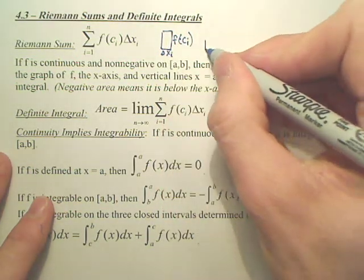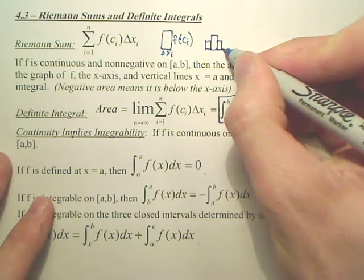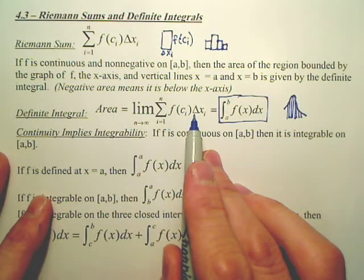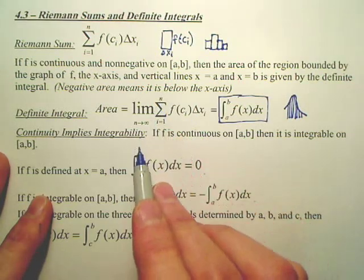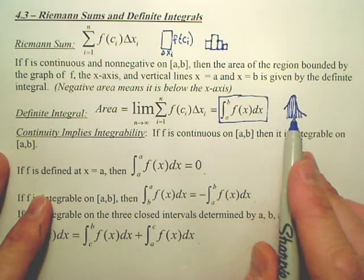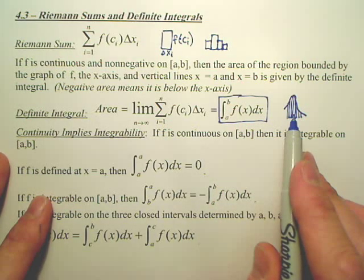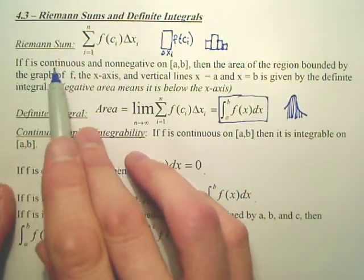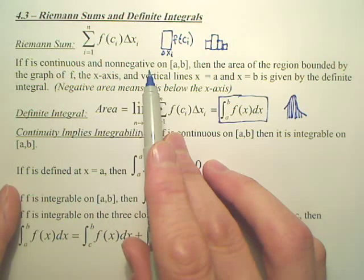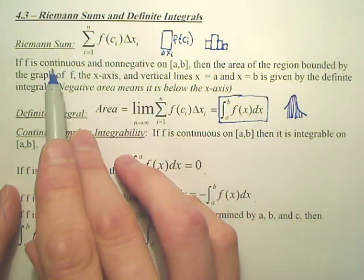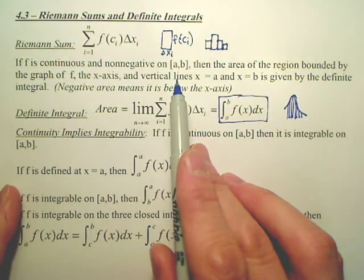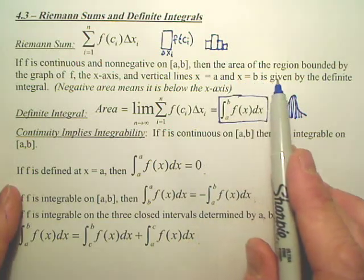Here, once you're adding up a whole bunch of rectangles, these had width — change of X. These do not anymore because change of X ends up being nothing when your limit approaches infinity. So basically, this integral sign is called a definite integral. It's adding up a whole bunch of non-width lines that's creating area under a curve. Going back to this: if F is continuous and non-negative — meaning if my function does not have any negative outputs and it's continuous on the closed interval AB — then the area of the region bounded by the graph F, the x-axis, and the vertical lines x equals a and x equals b is given by the definite integral.